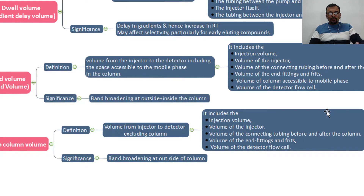The components that account for extra column volume are: injection volume, volume of the injector, volume of the connecting tubing before and after the column, volume of the end fittings and frits, and volume of the detector flow cell. These are the three different terms explained, and each term has its own significance.